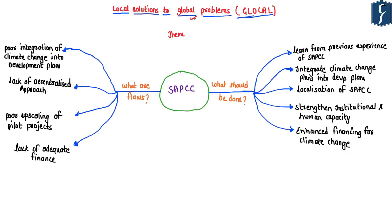The overall theme of the article is that climate change is a global problem, but global solutions through negotiations have failed. We need local solutions — termed 'glocal' — meaning local and innovative solutions to a global problem. These solutions must focus at state and district levels. When state and district levels are actively involved in combating climate change, we can find local solutions to the global problem, ushering in the concept of 'glocal' for combating climate change.